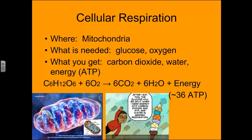For cellular respiration to occur we need glucose — some sugar — and we need oxygen. What you get out of cellular respiration are carbon dioxide, water, and some energy that's been captured and stored in the form of ATP.